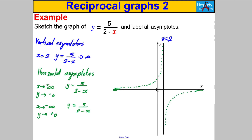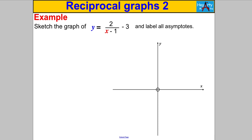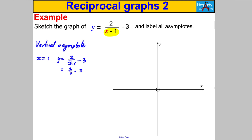The horizontal asymptote is y = 0, and we're done with that sketch. Let's try another one — same process. For y = 2/(x − 1) − 3, the vertical asymptote: we're dividing by zero when x = 1, because x − 1 = 0, making y = 2/0 − 3, which is undefined. So x = 1 is the vertical asymptote — draw and label it.